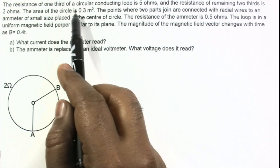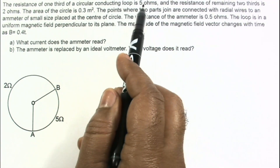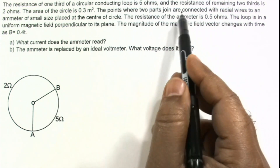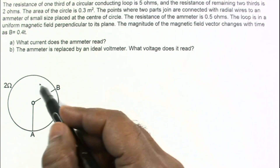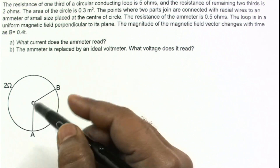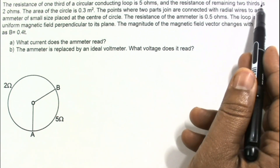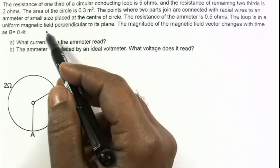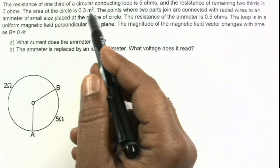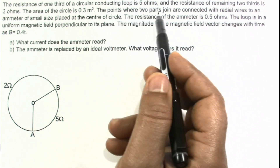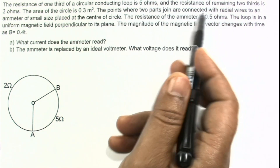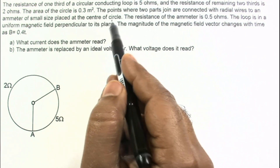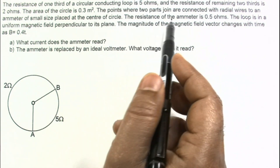In this problem, the resistance of one third of a circular conducting loop is 5 ohms. The remaining two thirds portion has a resistance of 2 ohms, with the one-third section subtending 120 degrees. The total area of the circle is 0.3 square meters. The points where the two parts join are connected with radial wires to an ammeter of small size placed at the center of the circle.